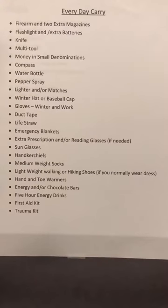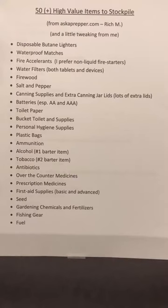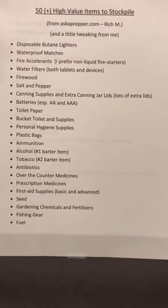The next one comes from Ask a Prepper — the author is Rich M. from askaprepper.com. This is 50-plus high value items to stockpile. I did a little tweaking to it, but I wanted to give Rich and askaprepper.com credit because it got my brain going. A lot of items on this stockpiling list you can take with you depending on your vehicle. The biggest thing I like is right in the middle where it says alcohol and tobacco — they are the number one and number two barter items out there, because people are going to go crazy without cigarettes, and having a good drink after a long day doesn't hurt.